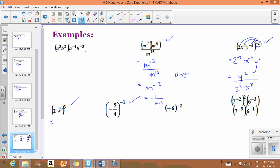Here's another one, power to a power. So we have 2 to the negative 1 times 3 is negative 3. We can't leave negative exponents, so it's 2 to the power of 3. And if we wanted to evaluate, we could do 1 over 8.